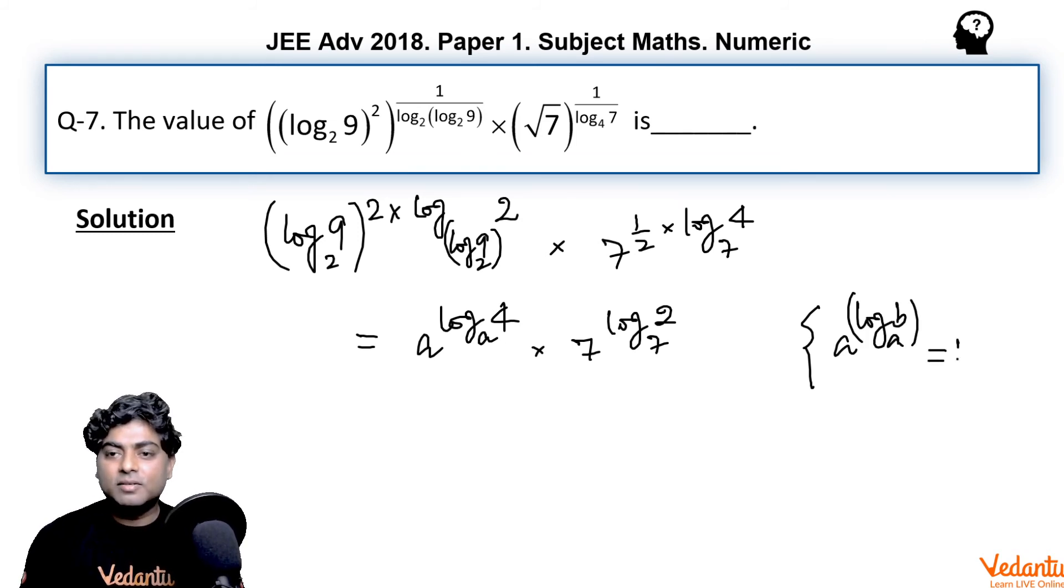So here in both terms I can write directly 4 in the first term and directly 2 in the second term. So the final answer to this question must be 4 × 2, which is 8.